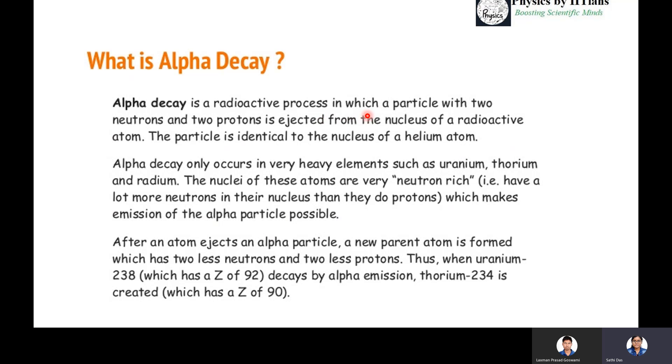Alpha decay is a radioactive process in which a particle with two neutrons and two protons are ejected from the nucleus of a radioactive atom. Helium-4 nucleus is an alpha particle. This particle is identical to the nucleus of a helium atom.